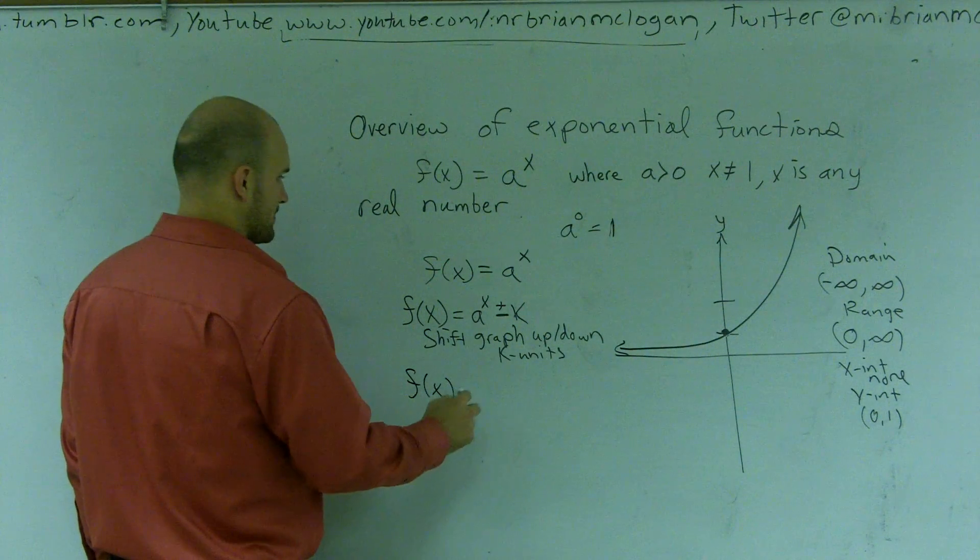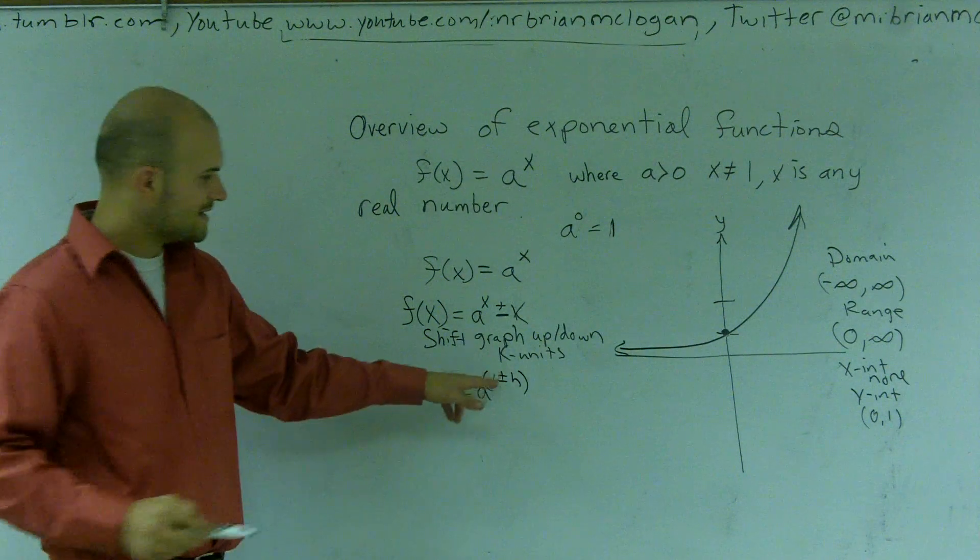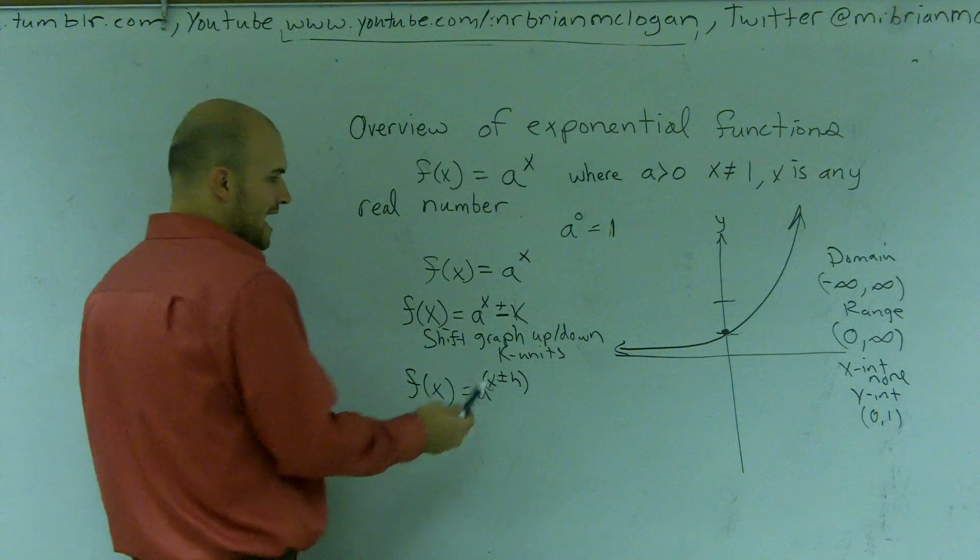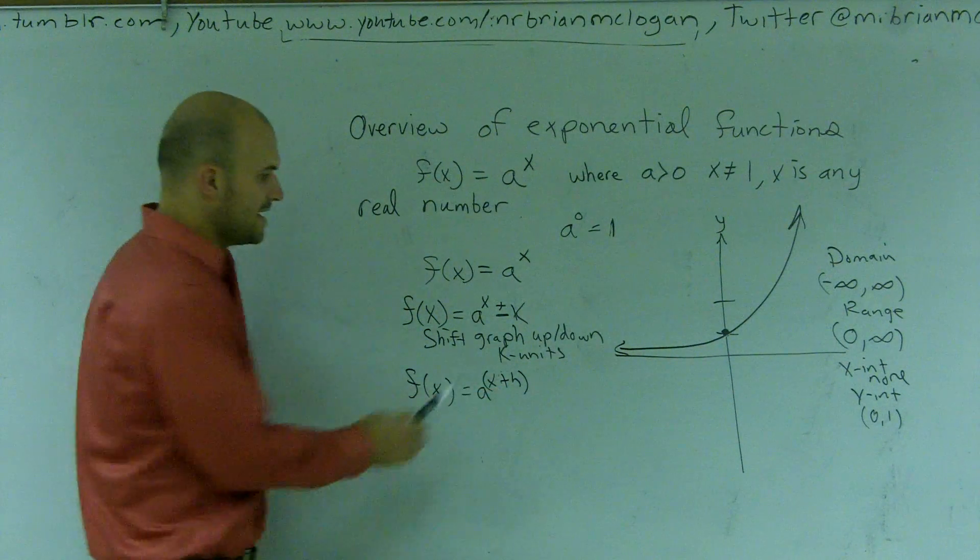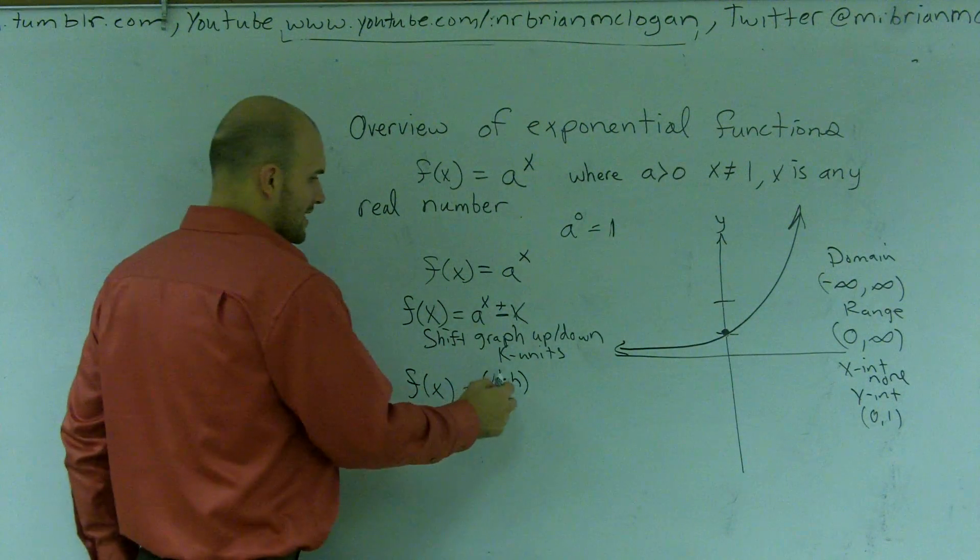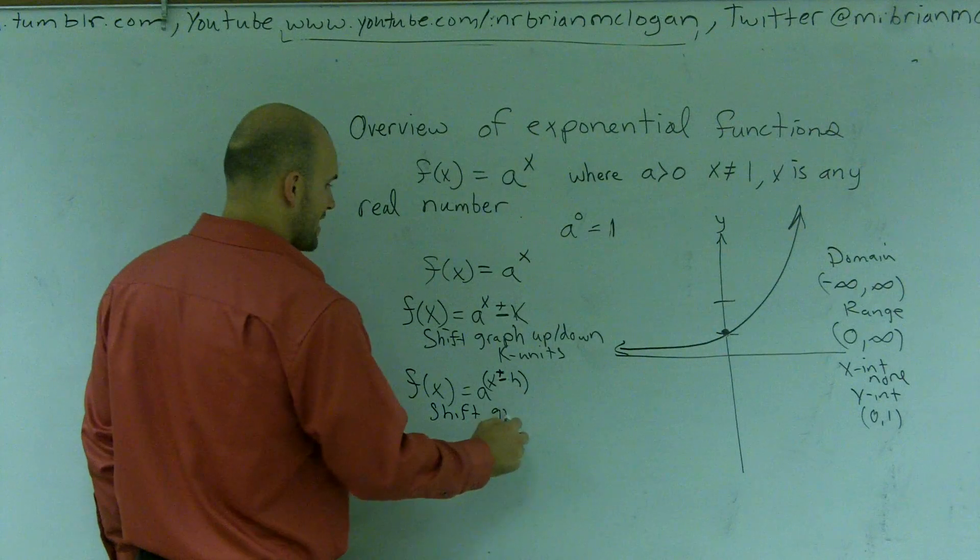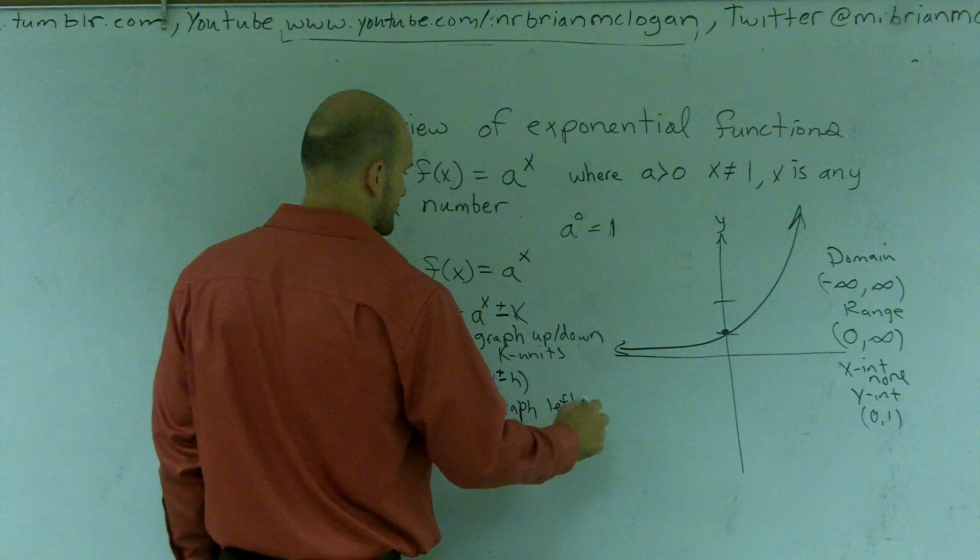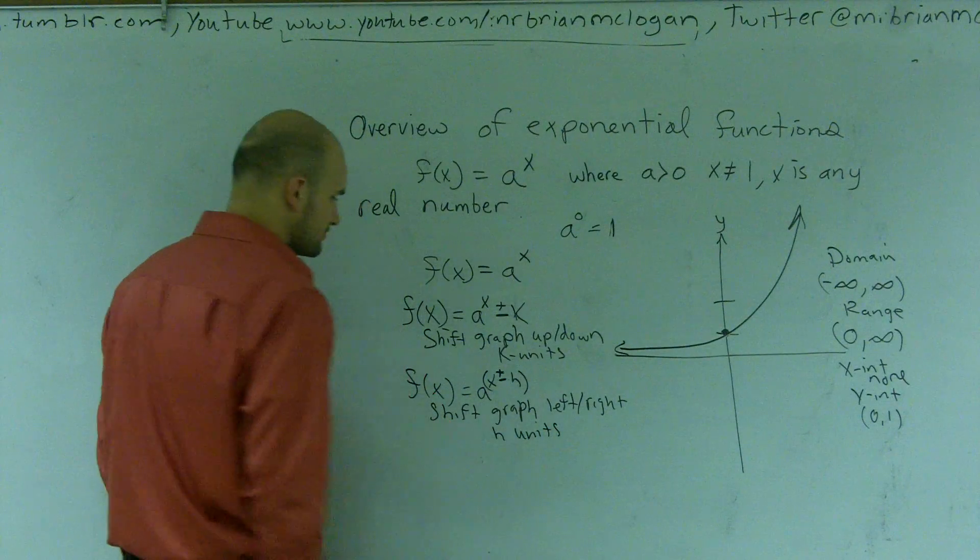If I do f of x equals a to the x plus or minus h, and it's inside of this function, that's going to tell me to shift left or right. And remember, it's always the opposite. If I had plus h, that would be shift left h units. And if I did a subtract, that would be shift h units to the right. So when I just do plus or minus, it's going to tell me to shift graph left or right h units.